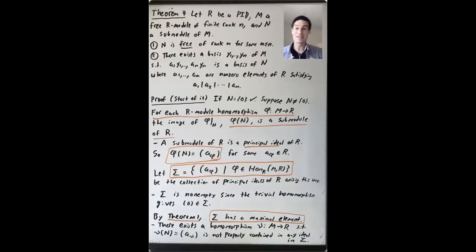In this video, I want to say something about the proof of theorem 4, this big result that gave us what we needed in order to prove the classification of modules over a PID existence theorem in invariant factor form.